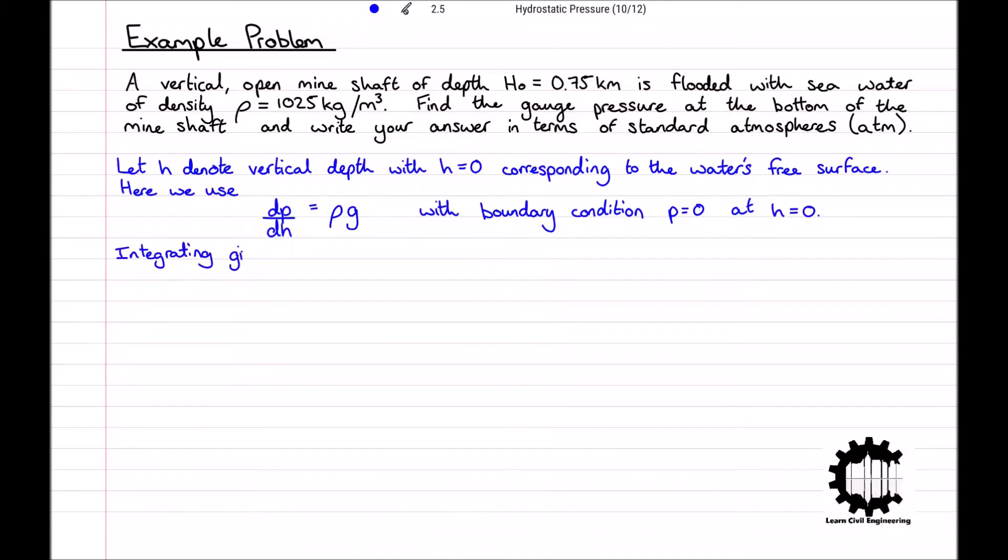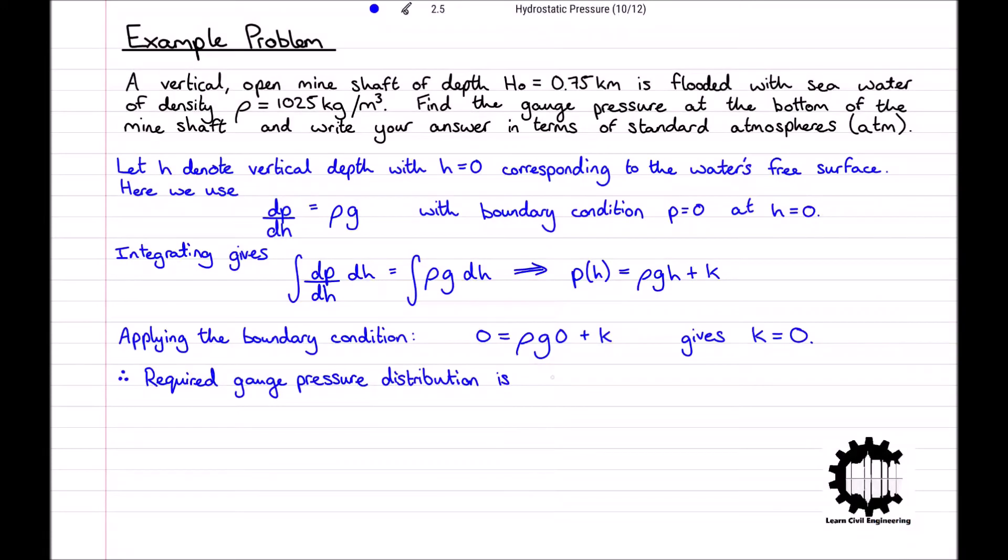Then, integrating this equation gives the integral of dp with respect to dh, which is equal to the integral of rho g with respect to dh, which gives us the pressure at point h is equal to rho g h plus some constant k. Applying the boundary condition of p equals 0 at h equals 0 gives k equals 0. Therefore, the required gauge pressure distribution is the pressure at point h is equal to rho g h for h greater than or equal to 0 but less than or equal to h0.